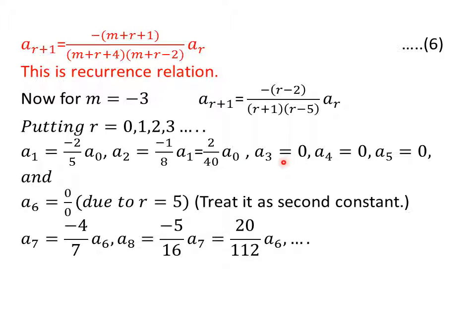A three will be zero. When we put r equal to two, then a three equal to zero. Due to a three, a four will also be zero and due to a four, a five will also be zero.